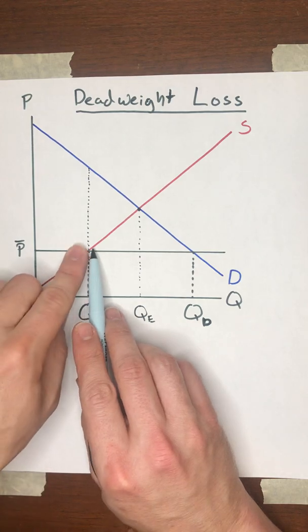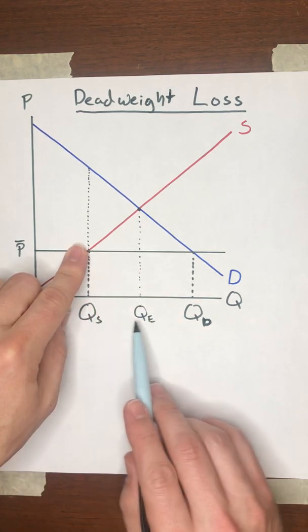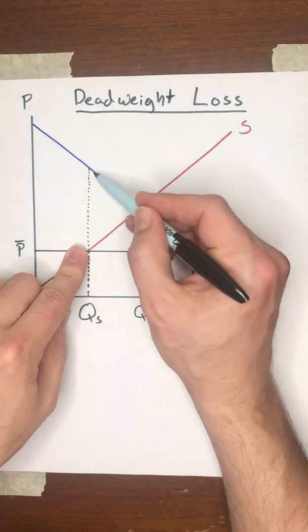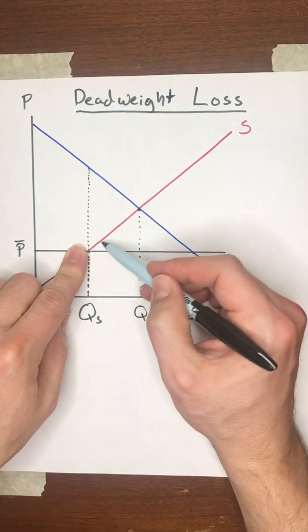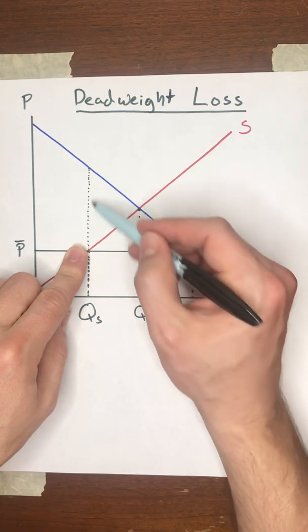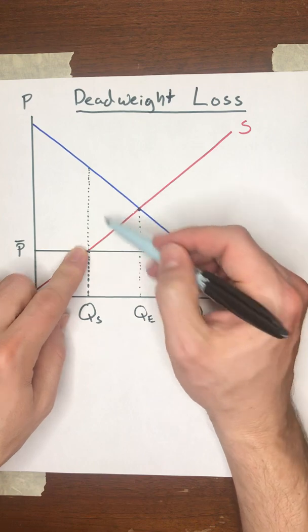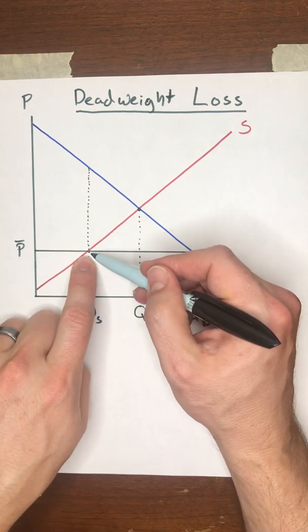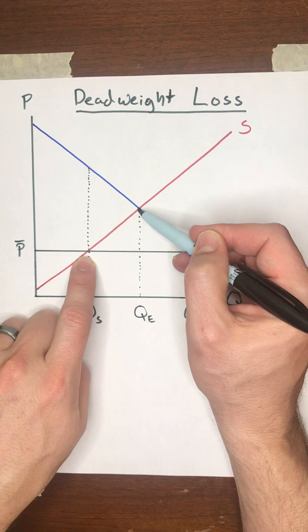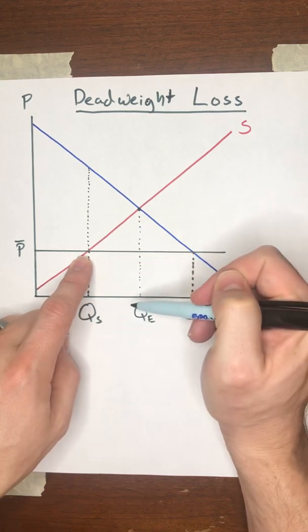So what does that mean? That means there's all of these trades between QS and QE where the buyers are willing to pay more than it costs the sellers to produce, but no transactions can occur because we're not allowing them to trade at a price that would make it profitable for both sides of the market to trade those last units.